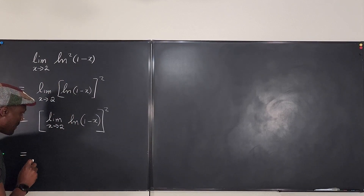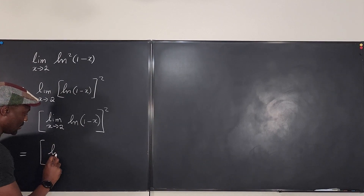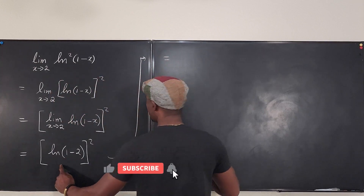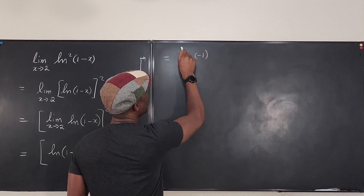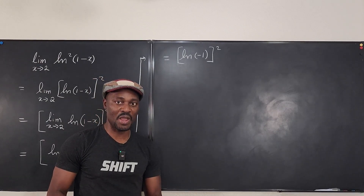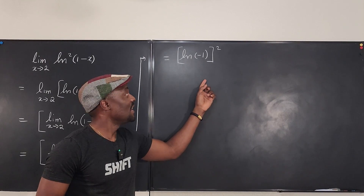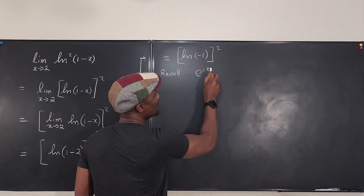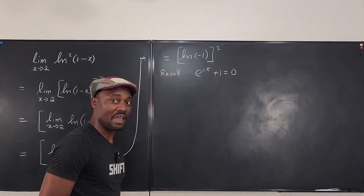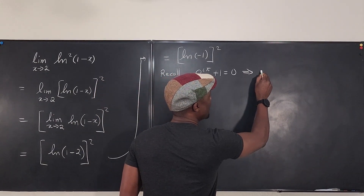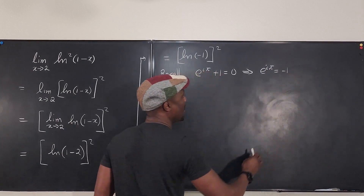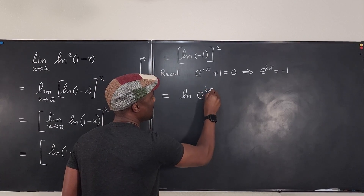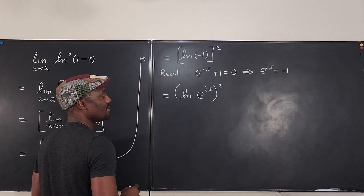Plugging in 2 gives the natural log of (1 minus 2), which is the natural log of negative 1, all squared. This is where Euler's identity comes in — without it, you can't go anywhere. Recall that e^(iπ) + 1 = 0, which implies e^(iπ) = −1. So I can replace negative 1 with e^(iπ) and write this as the natural log of e^(iπ), raised to the power 2.